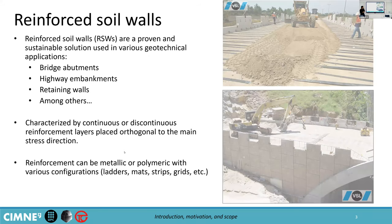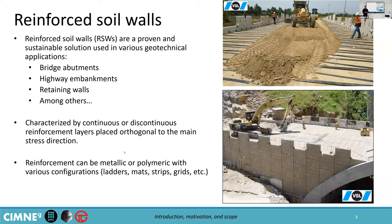Reinforced soil walls are a proven solution that's been used in the industry for years. It's a sustainable and safe solution used in various geotechnical applications, including bridge abutments, highway embankments, retaining structures, and other types of geotechnical solutions. It's composed of two principal materials: the compacted soil material, and the reinforcement layers. These reinforcement layers can be continuous or discontinuous horizontal layers embedded within compacted high-quality granular material. These reinforcements can be of extensible nature, or polymeric, or inextensible nature, or metallic.